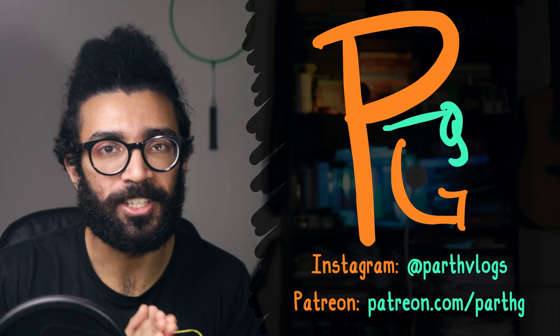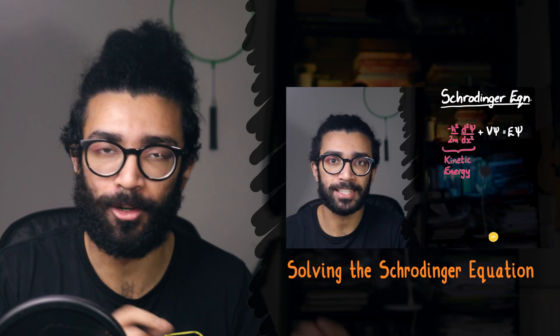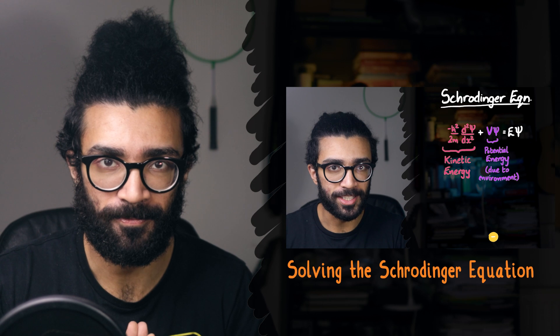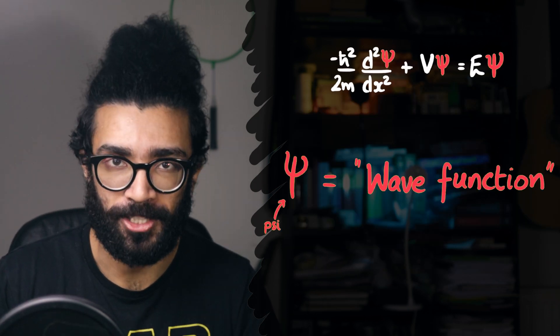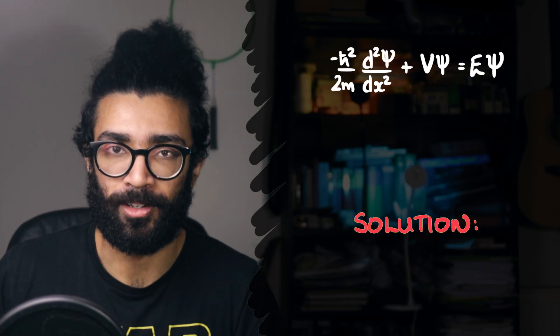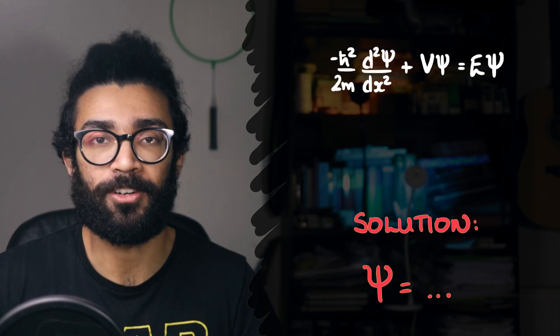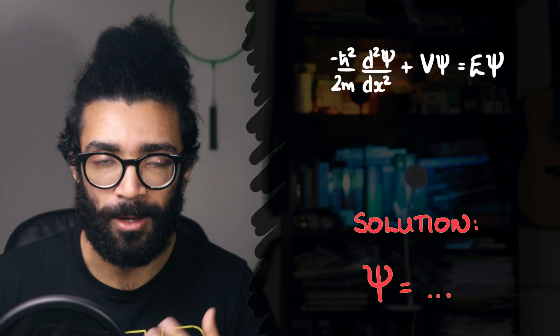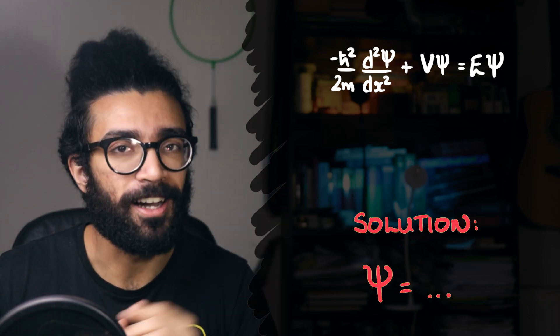Hey everyone, Parth here. Now in a recent video on my channel, I discussed how physicists go about solving the Schrödinger equation, as well as what it actually means to solve the Schrödinger equation. We saw that the Schrödinger equation deals with the quantity known as the wave function of any system that we happen to be studying. And solving the Schrödinger equation just means finding the wave function psi, where the wave function contains all the information we know about that system. You can check out that video if you haven't seen it already.